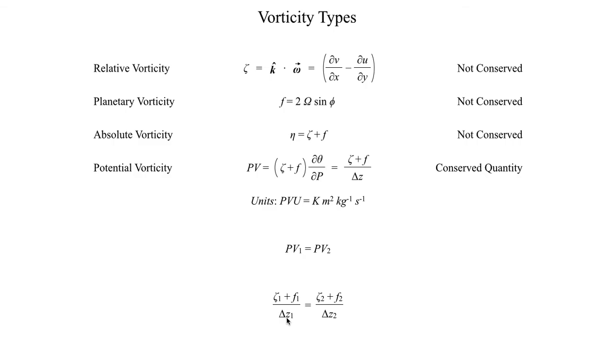divided by the column depth at time one must be equal to the relative vorticity at time two plus the planetary vorticity at time two, again, just the Coriolis parameter, divided by the depth of the column at time two.